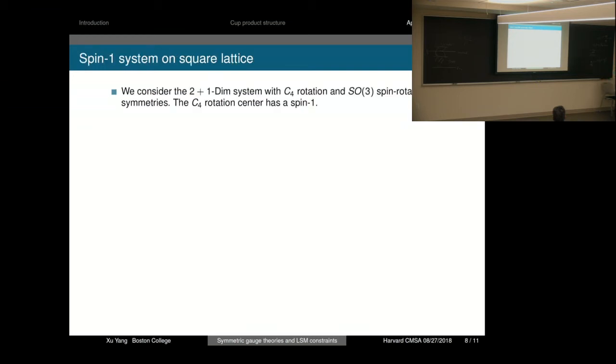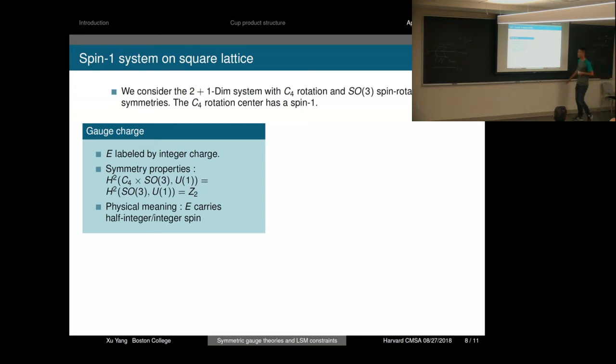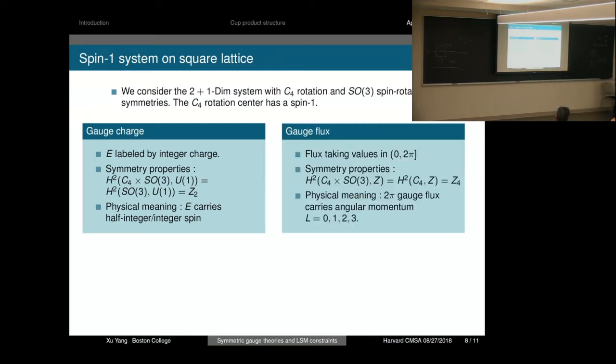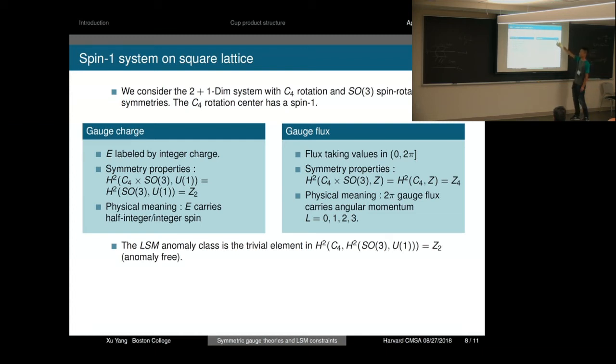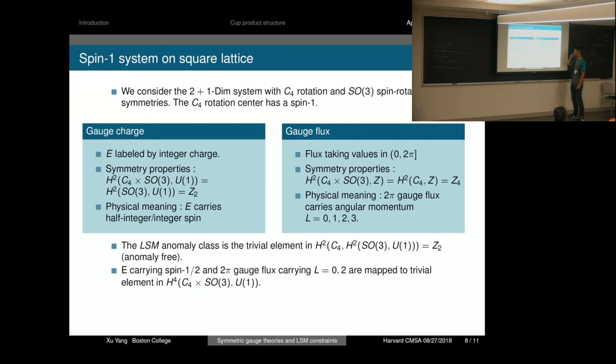Let's see a simple example: a spin-1 system on square lattice with C4 rotation and SO(3) spin rotation. We consider the rotation center as spin-1. The gauge charge is classified by Z2×Z2 symmetry, which means the E particle carries half-integer spin or integer spin. The gauge flux has Z4 classification, which tells whether the 2π gauge flux carries angular momentum 0, 1, 2, or 3 under rotation. The anomaly class has Z4 classification, which tells whether the C4 center has half-integer or integer spin. In our case, it's integer spin, so the anomaly class is trivial.